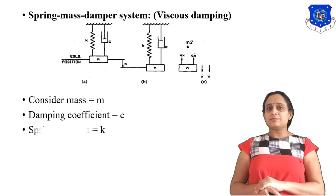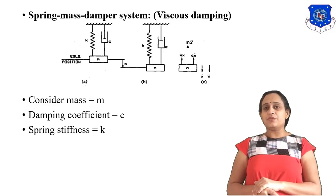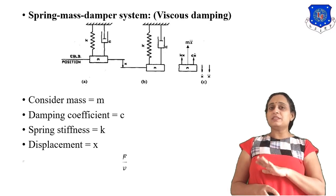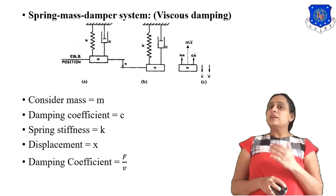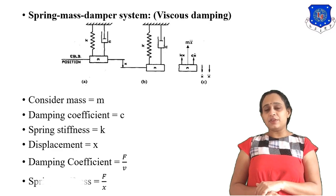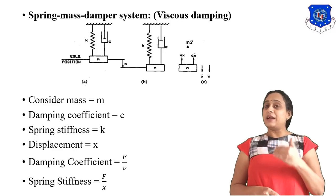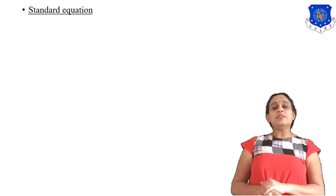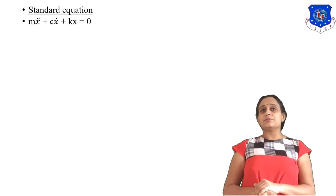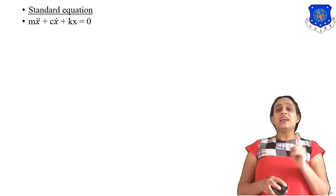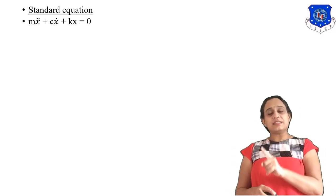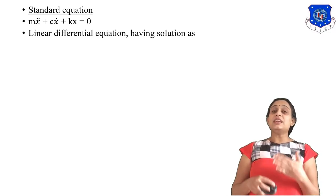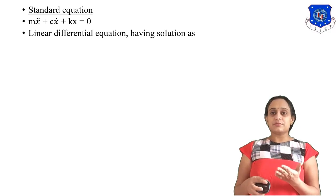The standard equation of viscous damping for a spring-mass system is: mx double-dot plus cx-dot plus kx equals 0. Here m is mass, c is damping coefficient (F/v), and k is spring stiffness (F/x). This equation is a second-order linear differential equation.